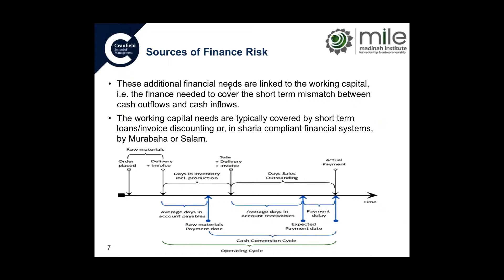There are also scenarios where the working capital can be negative. A common example is provided by large food retailers. Typically, retailers buy food and other products but enjoy up to 180 days of credit — meaning they only need to pay suppliers in 180 days. However, they put all products on shelves immediately and sell them quite rapidly, cashing in immediately as final customers do not ask for 30 or 60 days to pay. The result is that retailers are typically able to cash in from customers before paying suppliers.